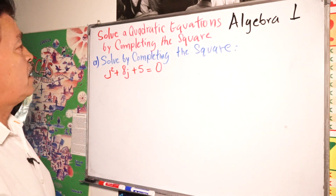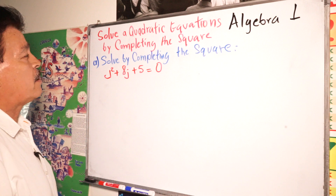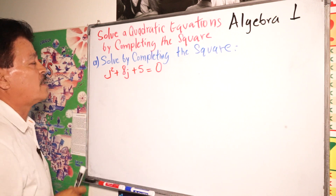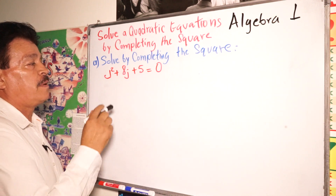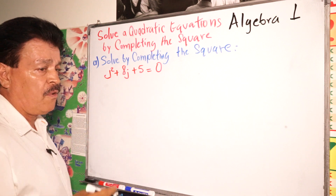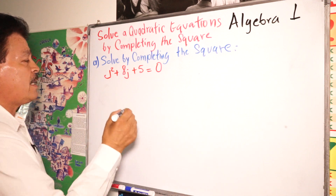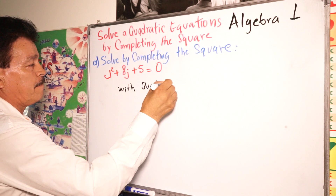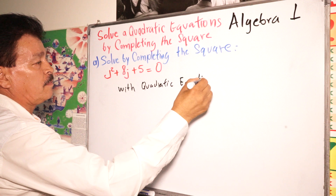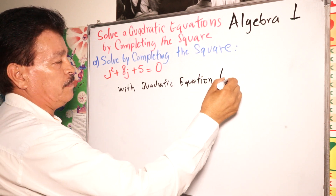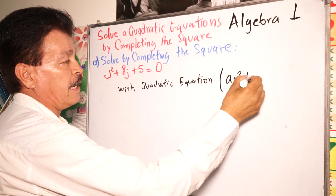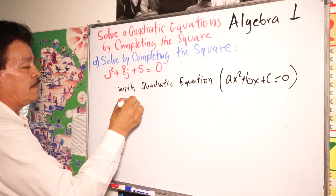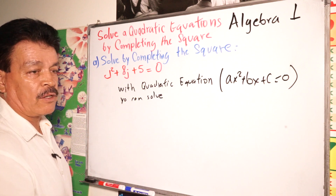Algebra one — the topic is solving a quadratic equation by completing the square. Our problem today is solved by completing the square. Remember, with a quadratic equation in the form ax² + bx + c = 0, you can solve by completing the square.